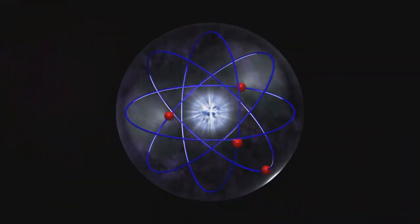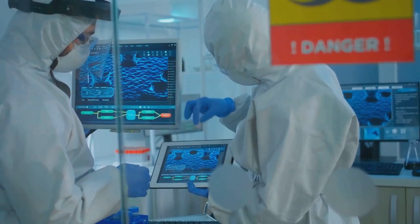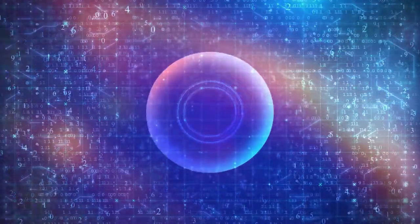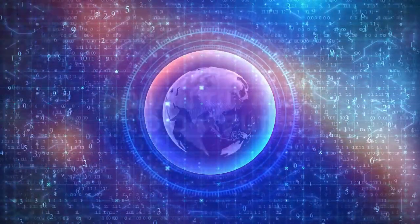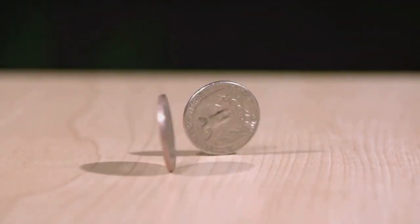Imagine a tiny particle like an electron. In the quantum world, this electron doesn't exist in a fixed state until we measure it. Instead, it exists in a superposition, a combination of multiple states at once. Think of it like a coin spinning in the air. Until it lands, it's neither heads nor tails. It's a blur of both possibilities.